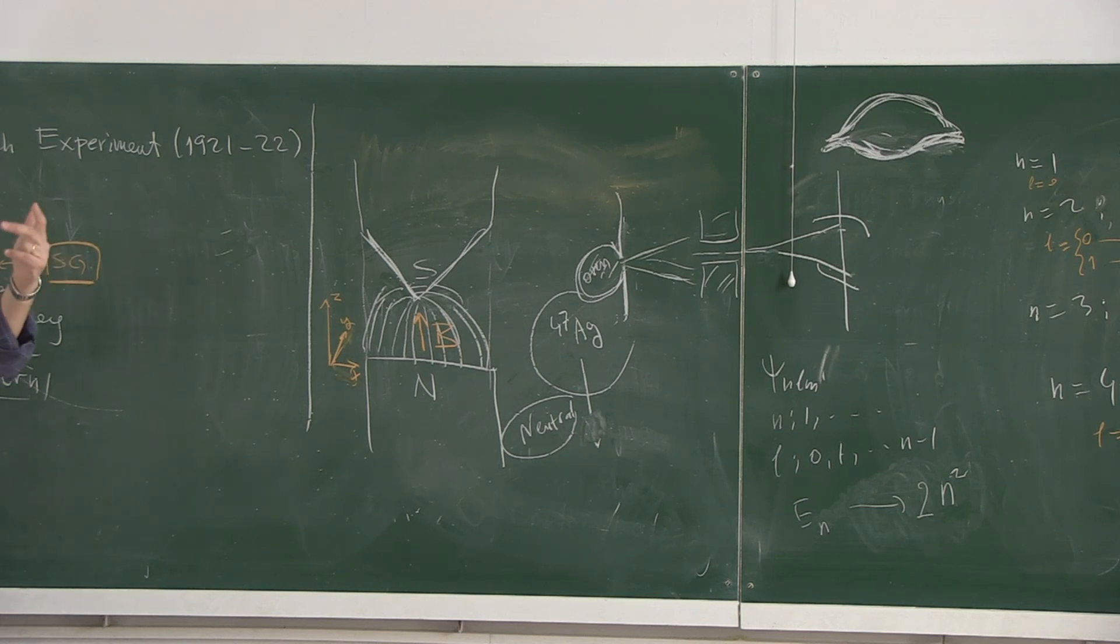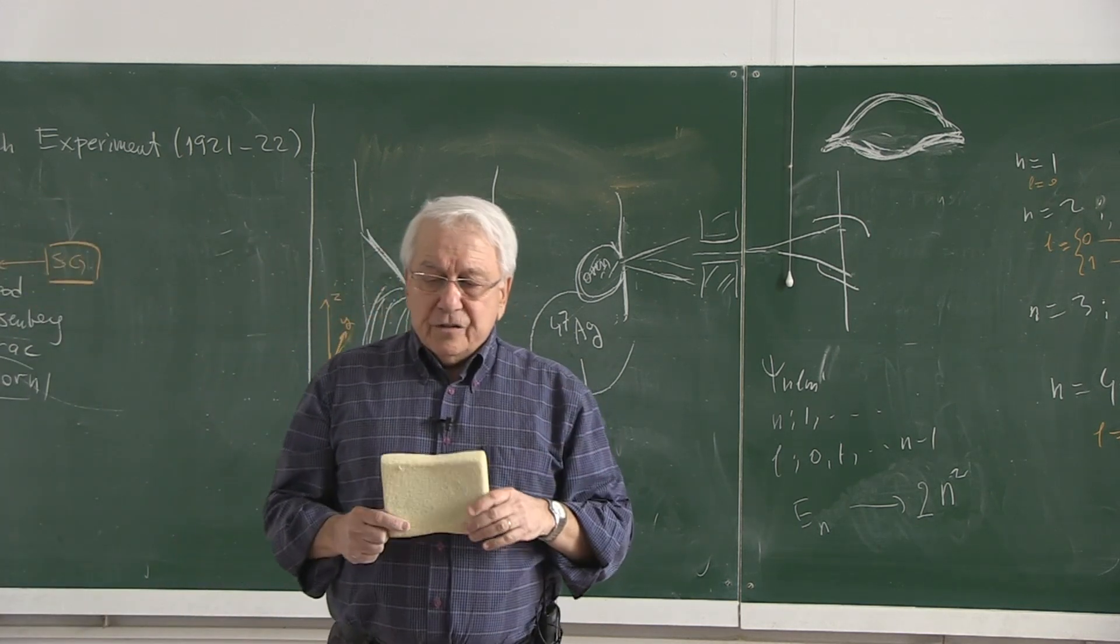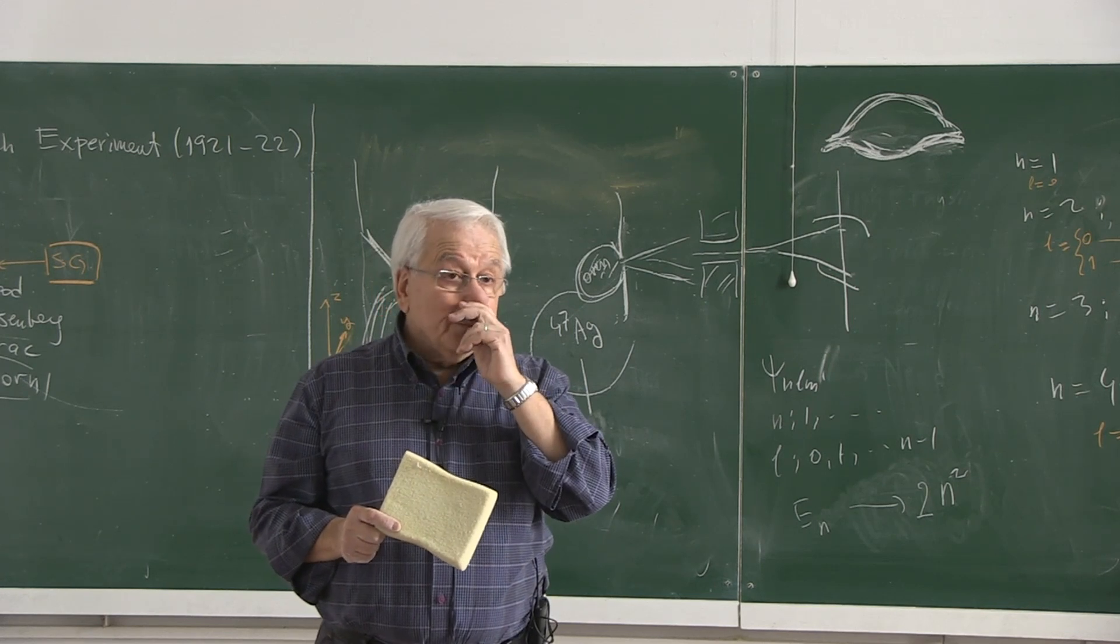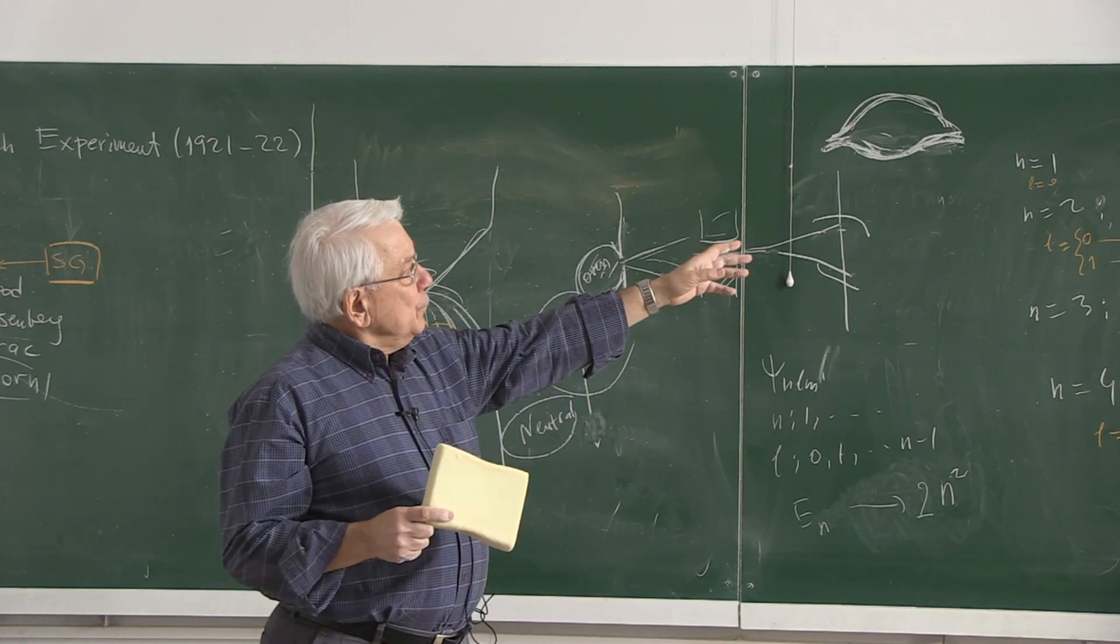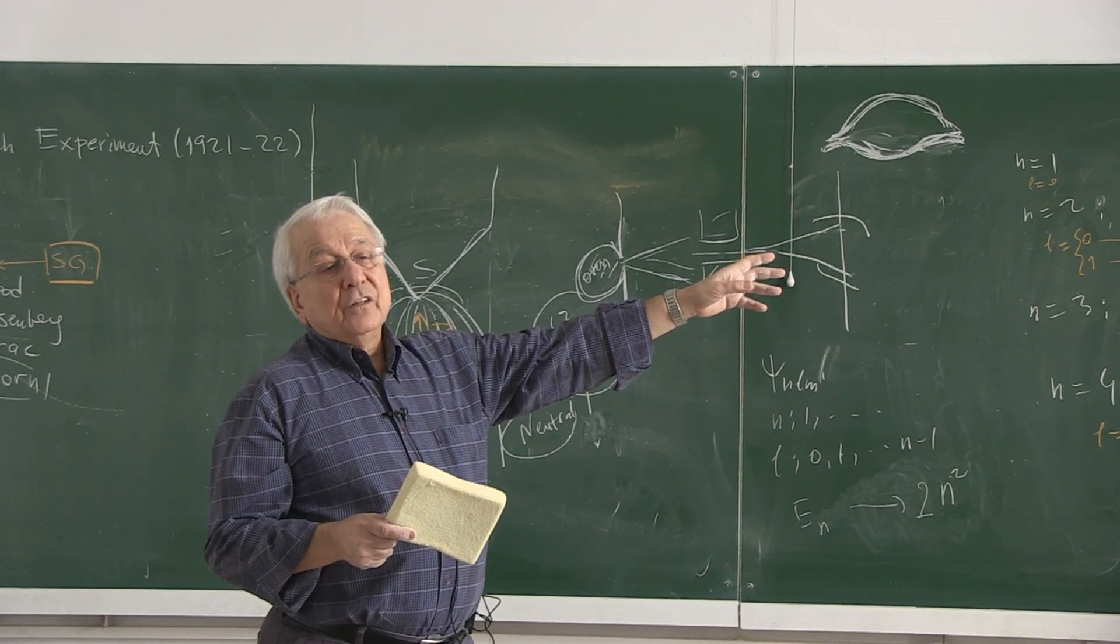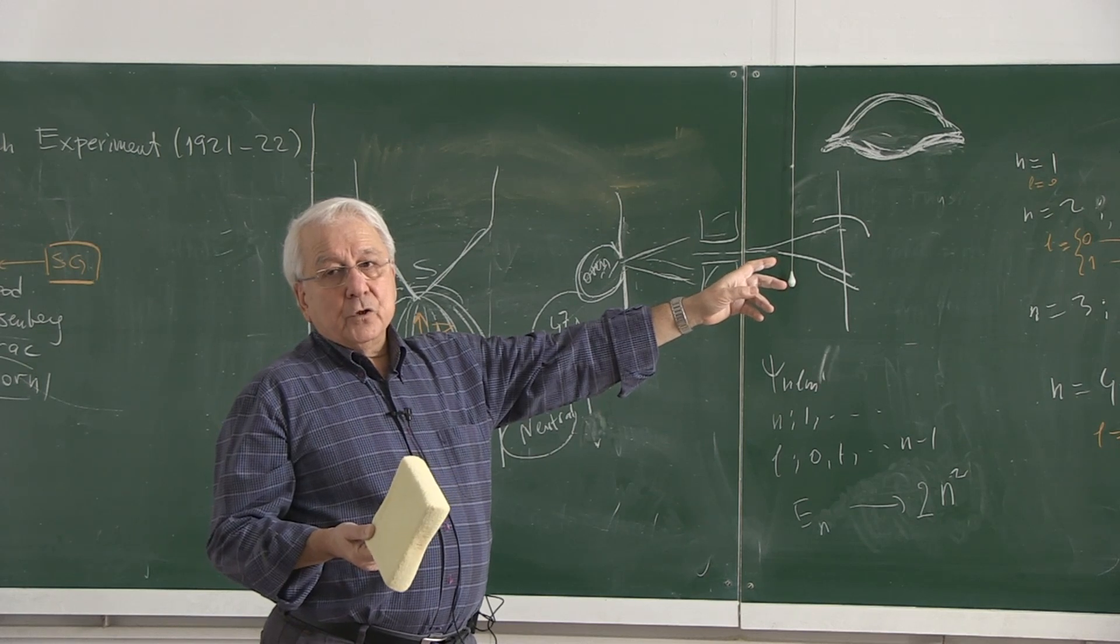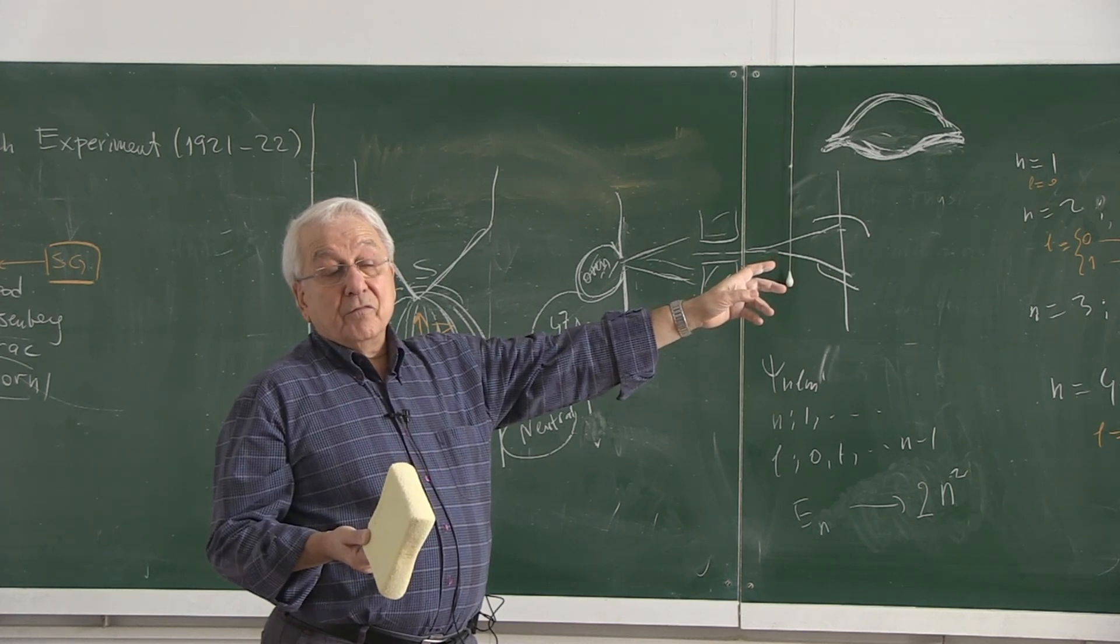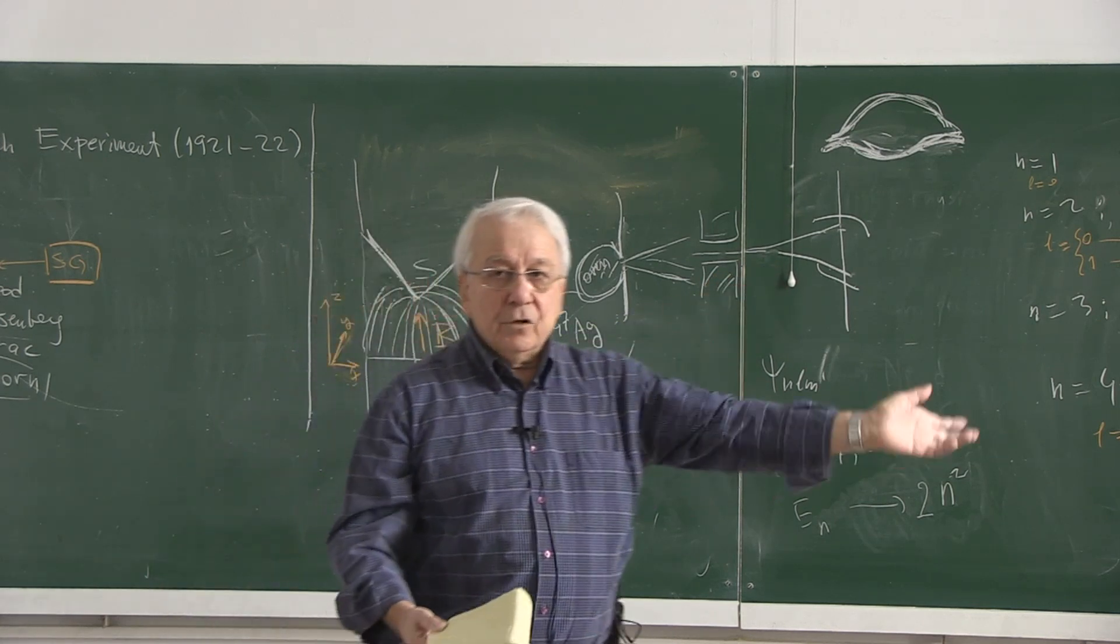If you were using a single electron, there would be uncertain fluctuations that would really spoil the picture. A proton is 2,000 times heavier than an electron. If you have 47 protons and about 50 neutrons, altogether about 100 nucleons, 100 nucleons are 200,000 times heavier than an electron.